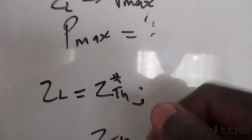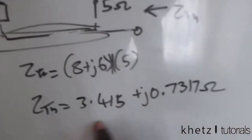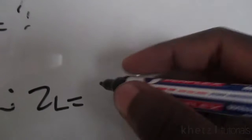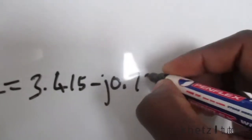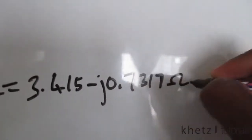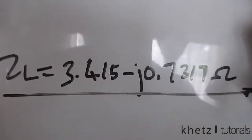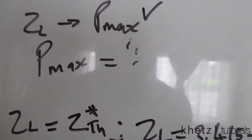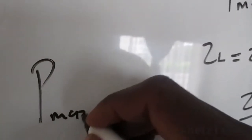We know that for maximum average power absorption, our load impedance has to be equal to the conjugate of Zth. The conjugate just changes this sign, which means our ZL for maximum average power will be 3.415 - j0.7317 ohms. This is the value of our load impedance for maximum average power, and that is the first part of the question.